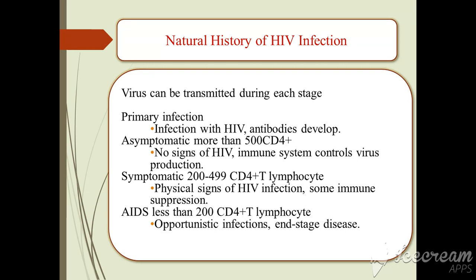Symptomatic stage: 200 to 499 CD4-plus T lymphocytes. There are physical signs of HIV infection and some immune suppression. The final stage is AIDS: less than 200 CD4-plus T lymphocytes, with opportunistic infections and end-stage disease.